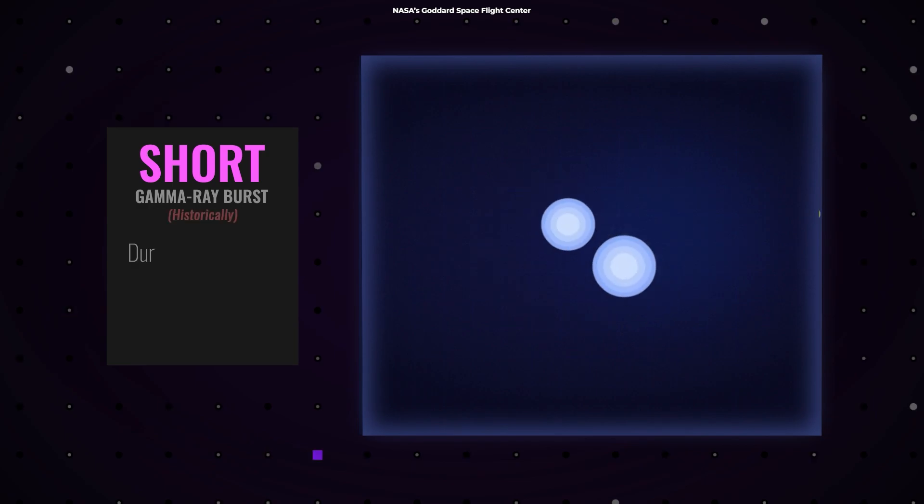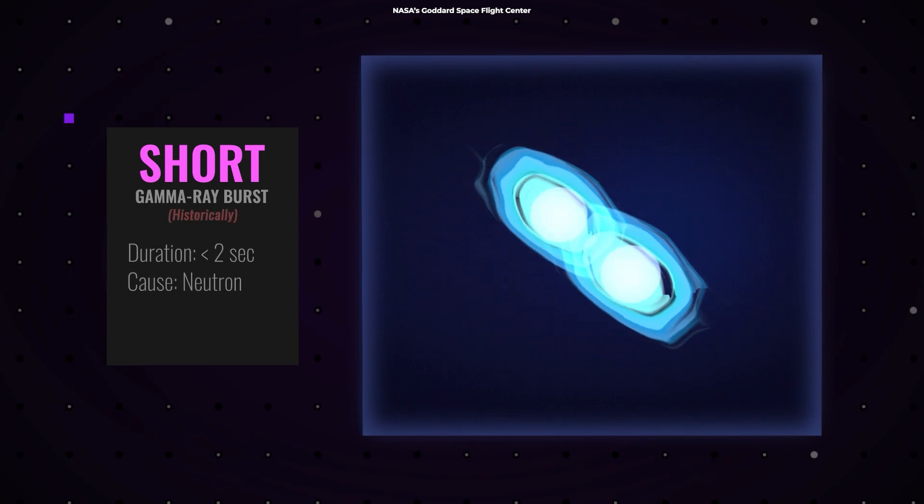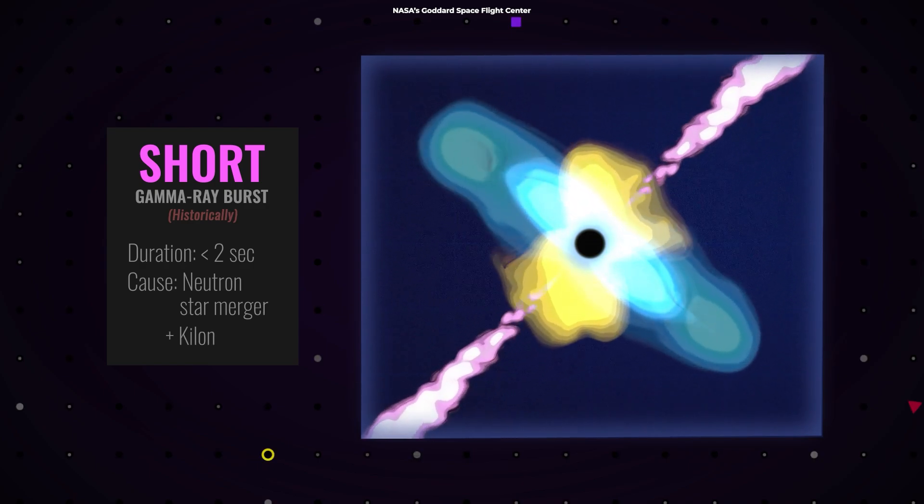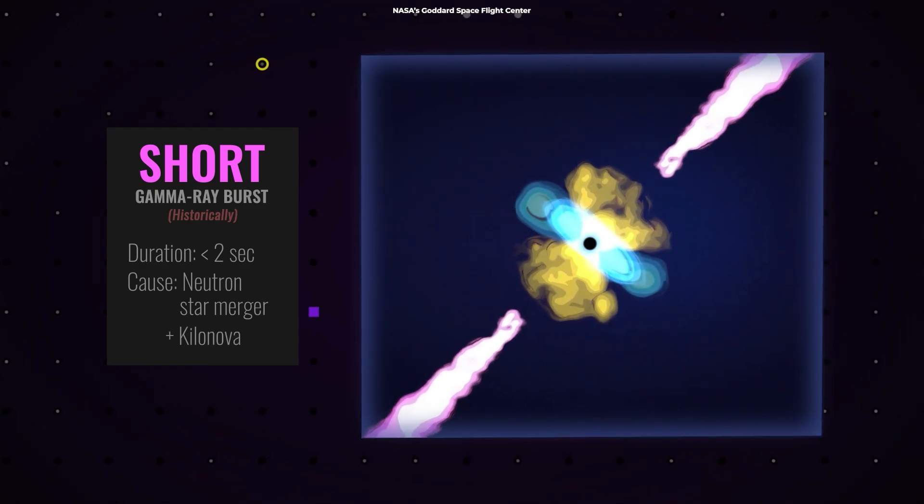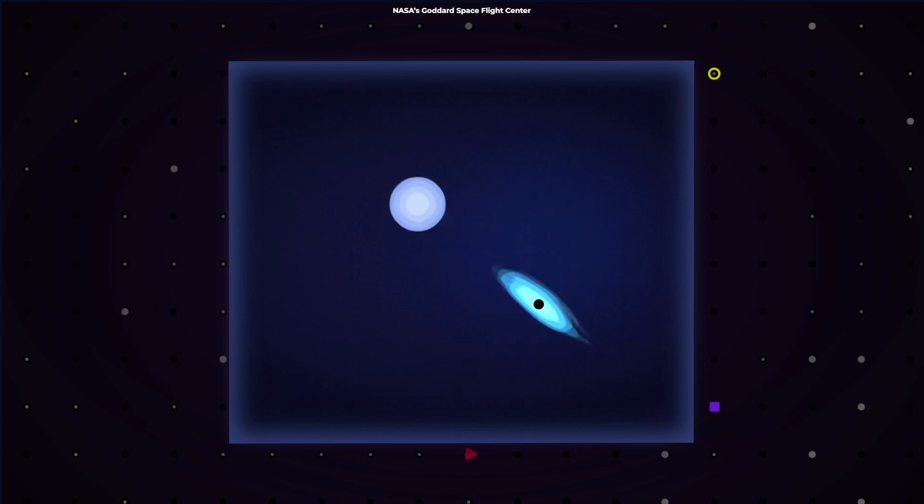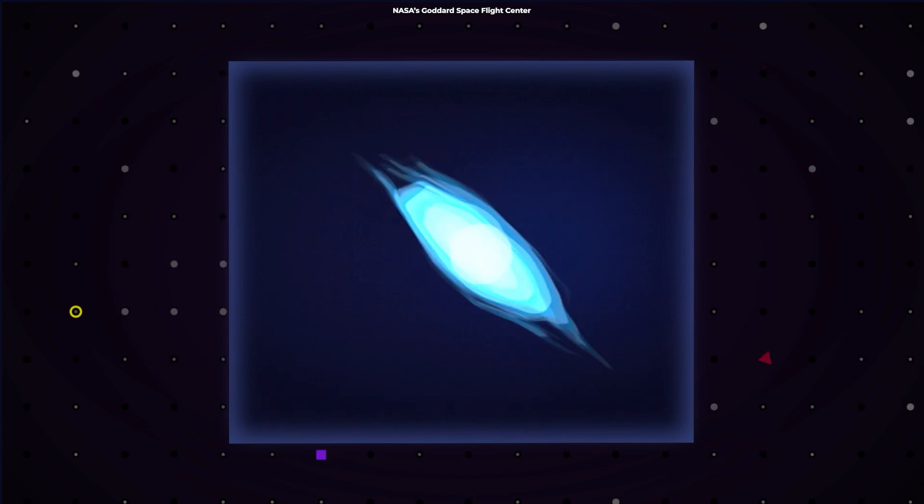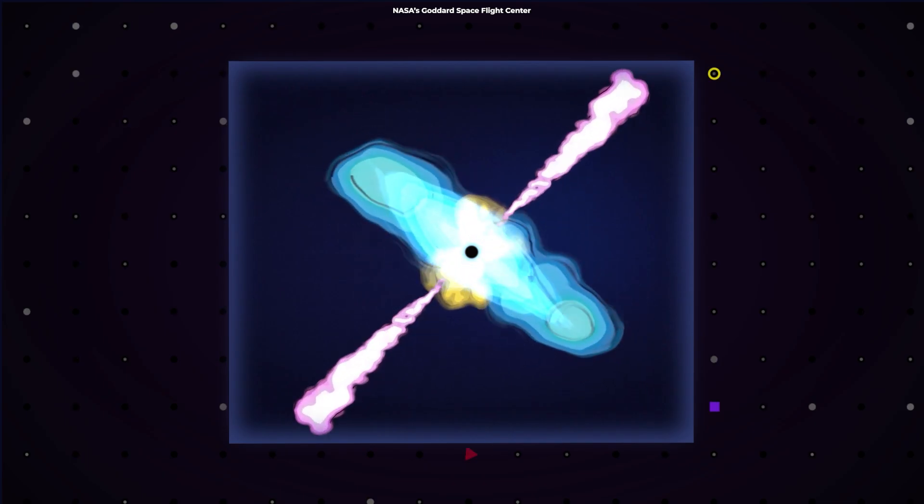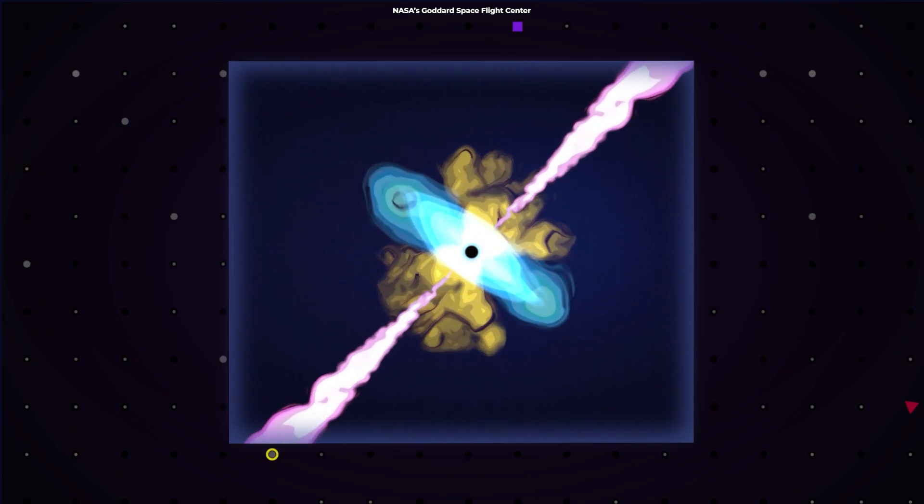Short GRBs, on the other hand, last less than two seconds, and are the result of a cosmic meet-cute, but with a deadly twist. When two compact objects like neutron stars, or a neutron star and a black hole, decide to take their relationship to the next level and merge, they create a short GRB.